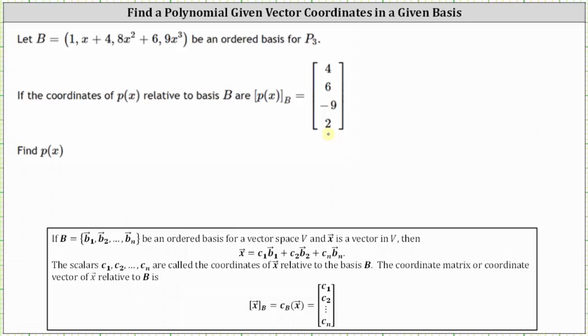Looking at our notes, if the set B is an ordered basis for a vector space V and vector x is a vector in V, then vector x equals a linear combination of the vectors in set B, and the scalars C sub 1 through C sub n are the coordinates of vector x relative to the basis B.